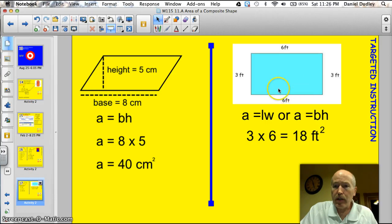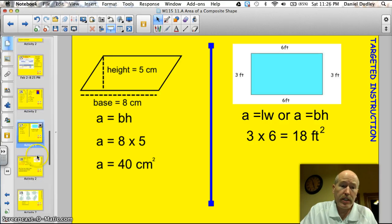And finally, the area of a rectangle. Some people say that the formula is length times width or base times height. Either one works. This one here is 3 times 6, or 18 feet squared. Alright, let's take a look at our first example for tonight.